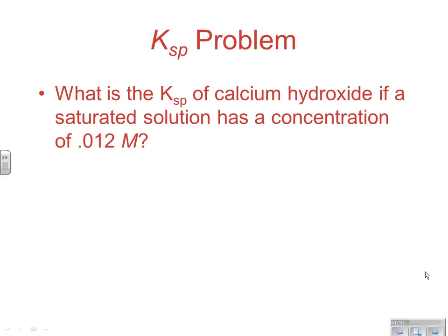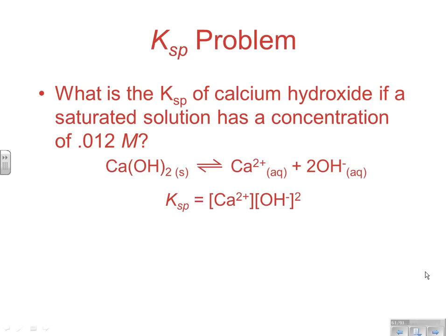What is the Ksp of calcium hydroxide if a saturated solution has a concentration of 0.012 molar? First, you would take a look at the reaction — always write the reaction first. From there, you can write the Ksp expression. Ksp equals the concentration of Ca²⁺ times the concentration of OH⁻ squared. Remember, raise it to the power of its coefficient. Since we know the concentration of calcium hydroxide at saturation, be careful of this.